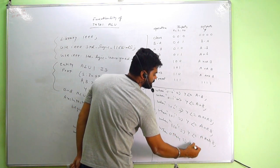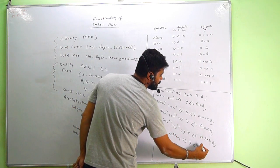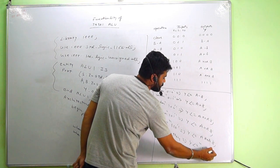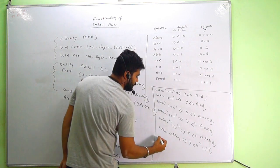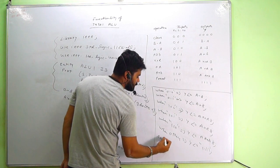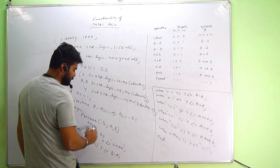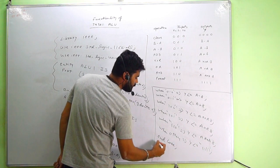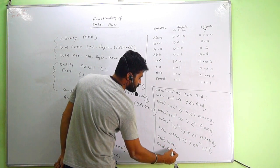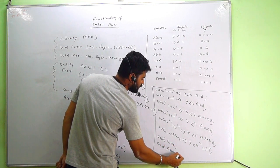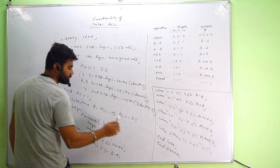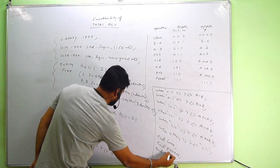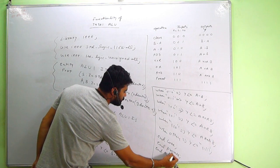When 110, Y is A AND B. When 111, Y is assigned 1111 — that is preset. When others, assign Y as 0000. End case, end process, and ultimately end architecture A_ALU1.